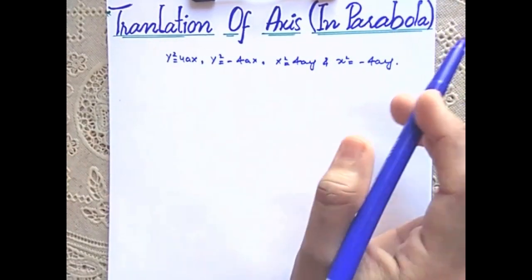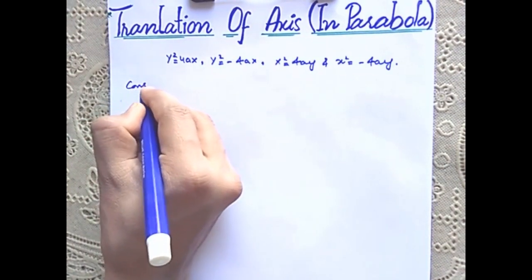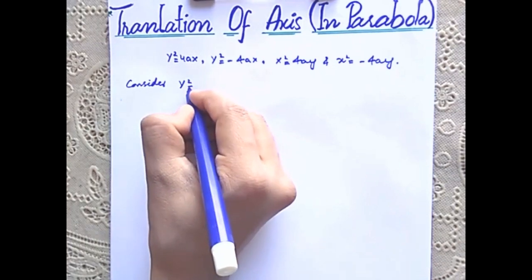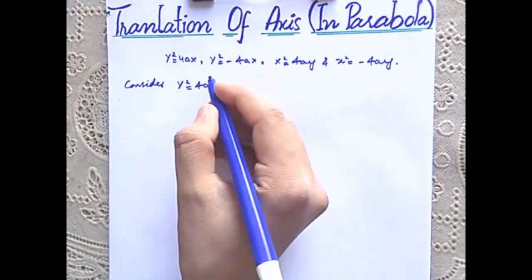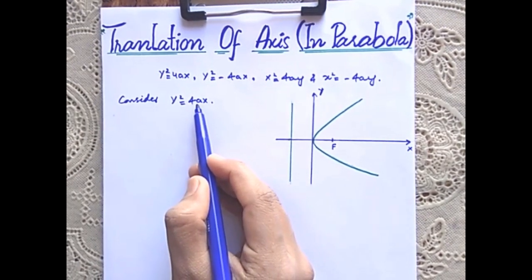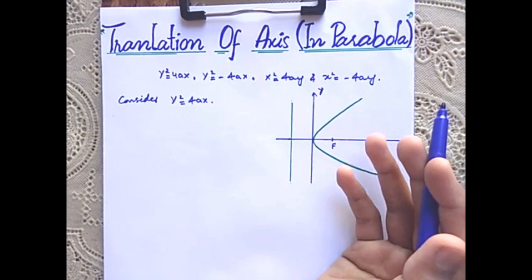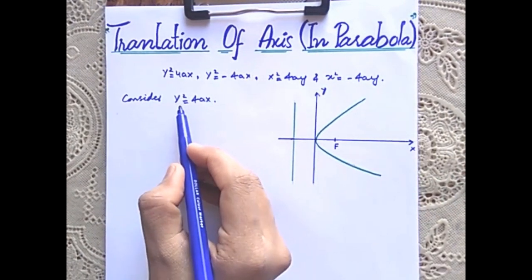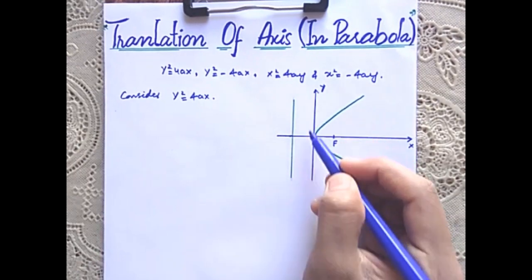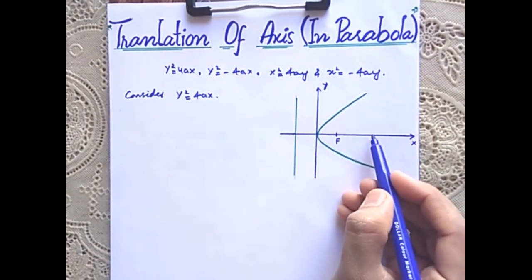Let us again consider the equation y² = 4ax. Here, since a is positive, the opening of the parabola will be towards the positive x-axis. The vertex will be at the origin, the directrix is parallel to the y-axis, and the axis of the parabola lies on the x-axis.